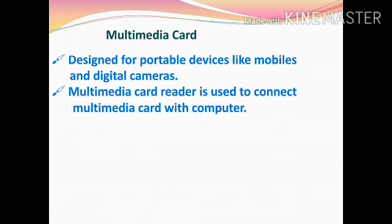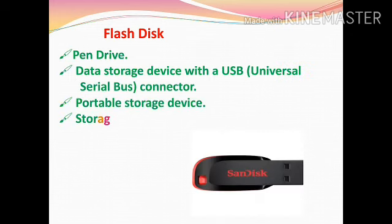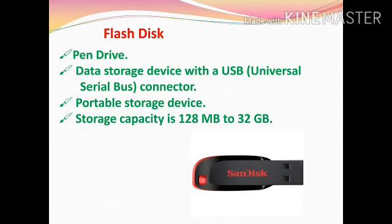The next type of secondary storage device is flash disk, popularly known as pen drive. It is a data storage device with a USB connector — a universal serial bus connector — fixed in it. It is a portable storage device, meaning we can carry data from one place to another easily, and it can be connected and removed very easily from the CPU. The storage capacity typically ranges from 128 MB to 32 GB and more.